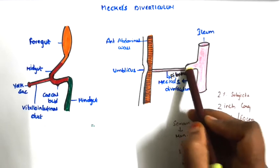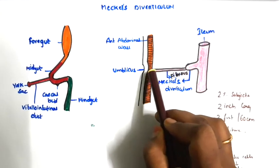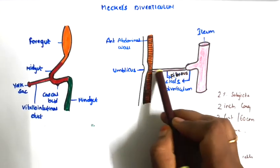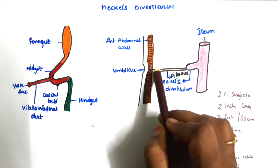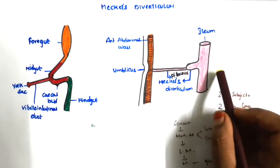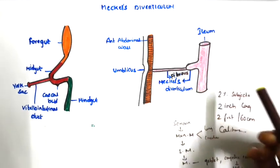This is the apex of Meckel's Diverticulum. This apex will attach to the umbilicus or anterior abdominal structures through a fibrous band, or sometimes this fibrous band will attach to the mesentery. Let's see some points regarding Meckel's Diverticulum.